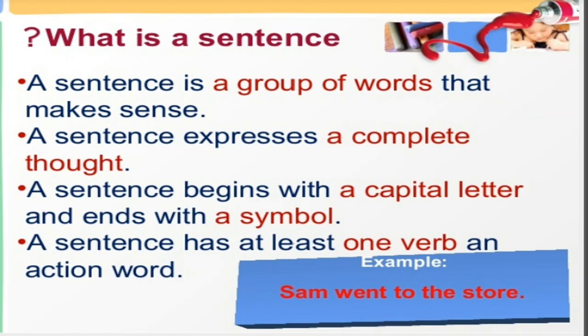Once you read those group of words, it should give you a complete thought. A sentence begins with a capital letter and ends with a symbol. A sentence must begin with a capital letter and end with a symbol. A sentence has at least one verb — that is the action word. For example: 'Sam went to the store.' This sentence is complete; it shows a definite meaning, a complete thought with the subject Sam and one verb — 'went.'